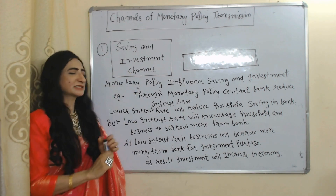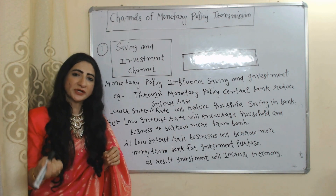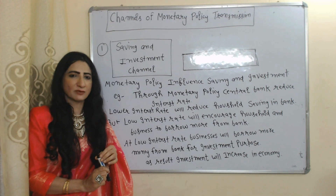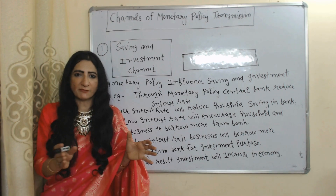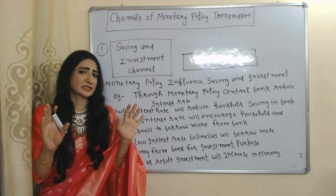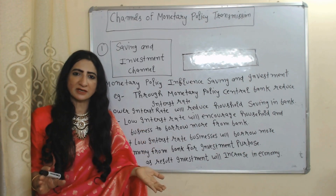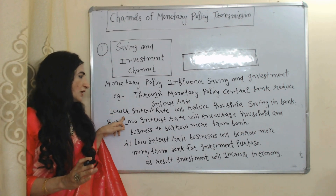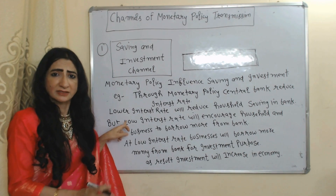The first channel is the saving and investment channel — that means monetary policy influences saving and investment. Through monetary policy, the central bank reduces interest rate, but lower interest rate will reduce household saving in banks.